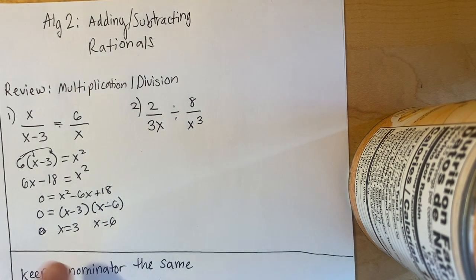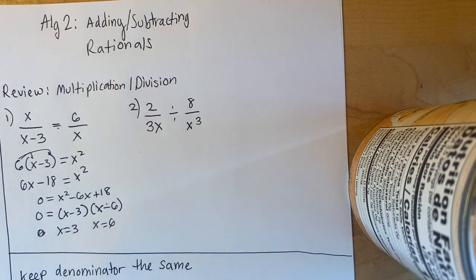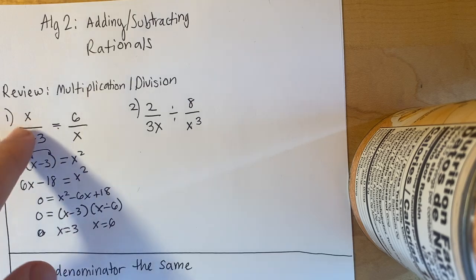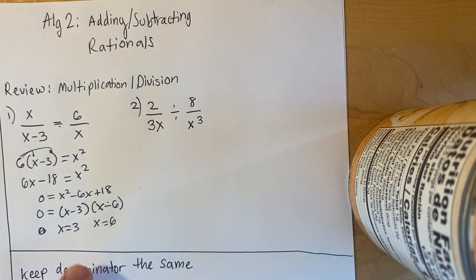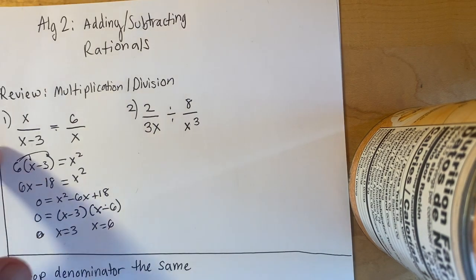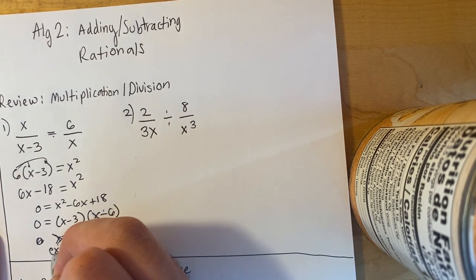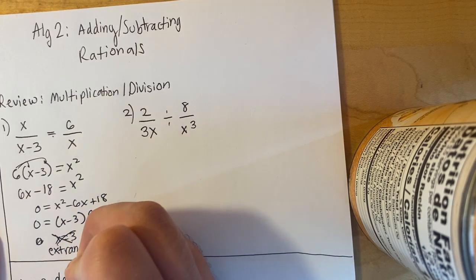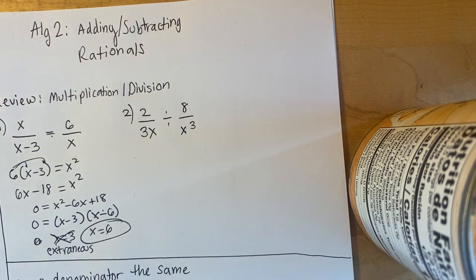But wait — we also learned last week that sometimes you can have extraneous solutions. You have to go back and check the original question. I see that I have an x minus 3 in the denominator, and one of my answers is x equals 3. That's not going to work because 3 minus 3 is 0, and we cannot divide by 0. So x equals 3 is extraneous, and our answer is x equals 6.